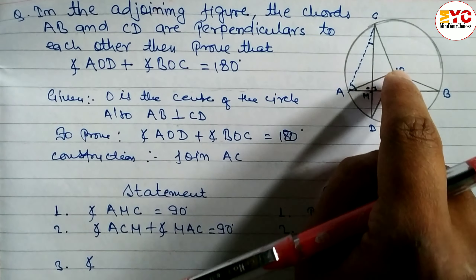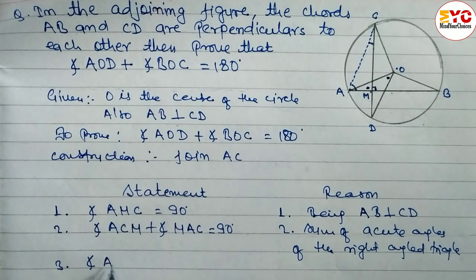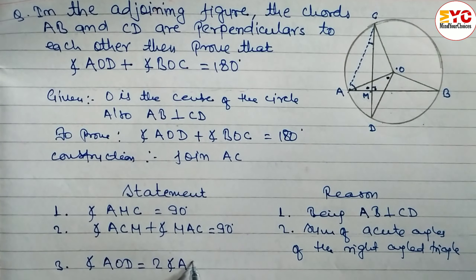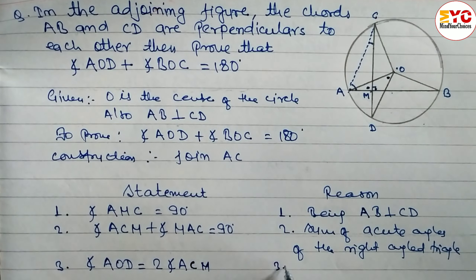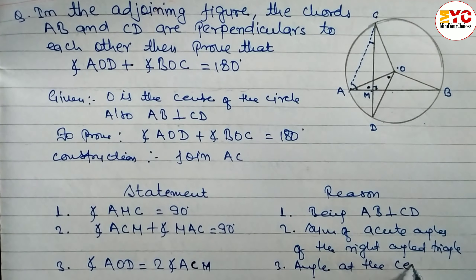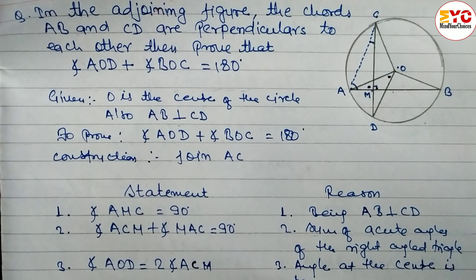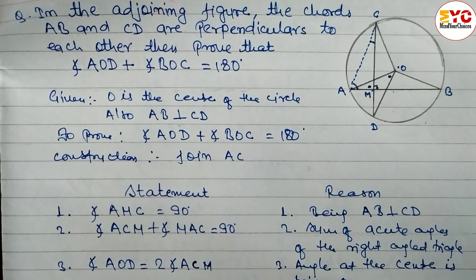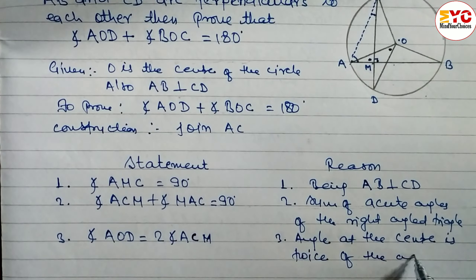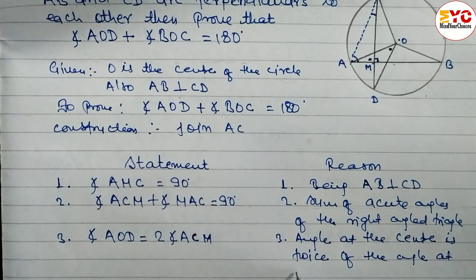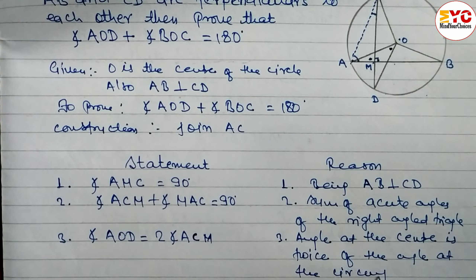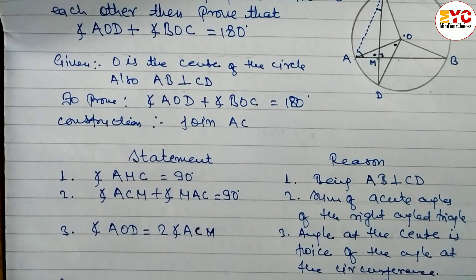This is the inscribed angle and this is the central angle. So we write: angle AOD = 2 × angle ACM. Reason: the angle at the center is twice the angle at the circumference, or central angle is double the inscribed angle.